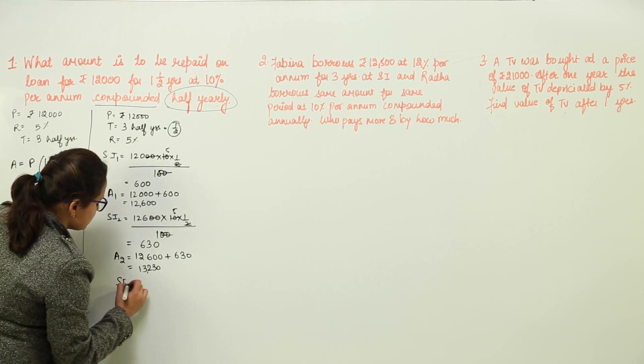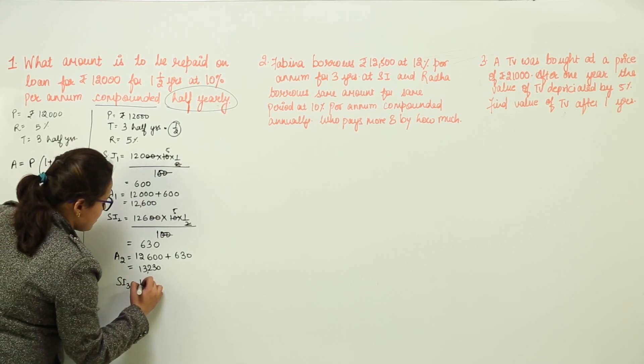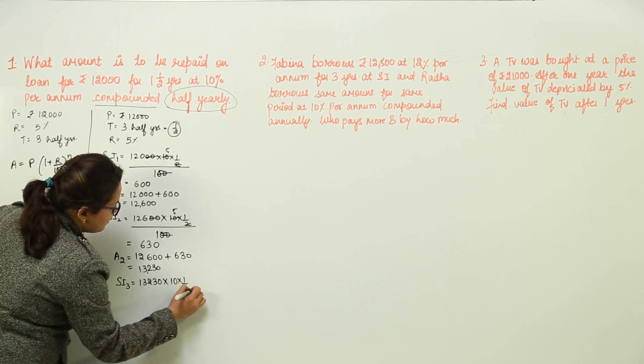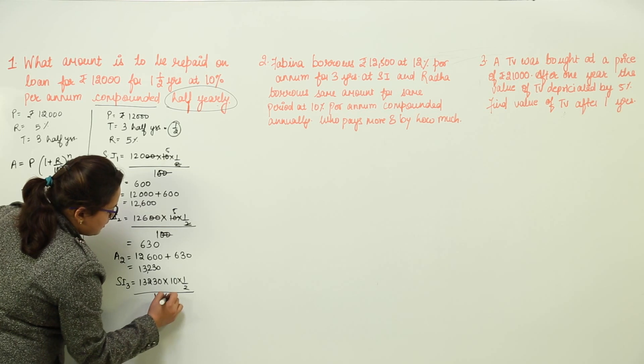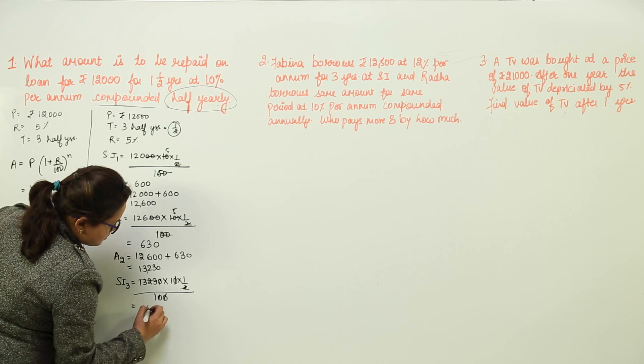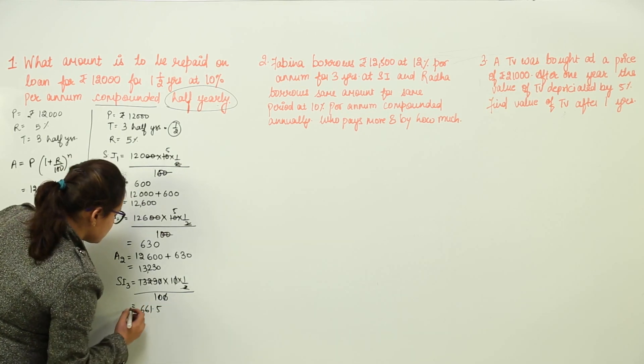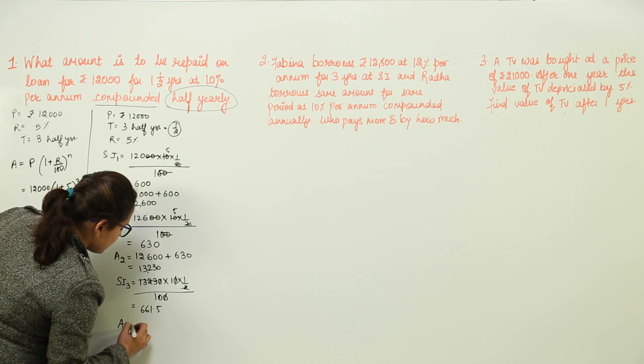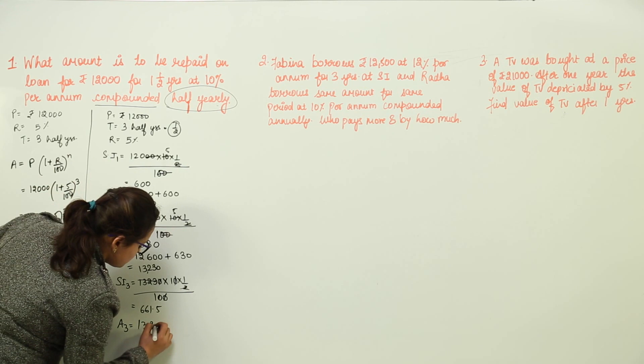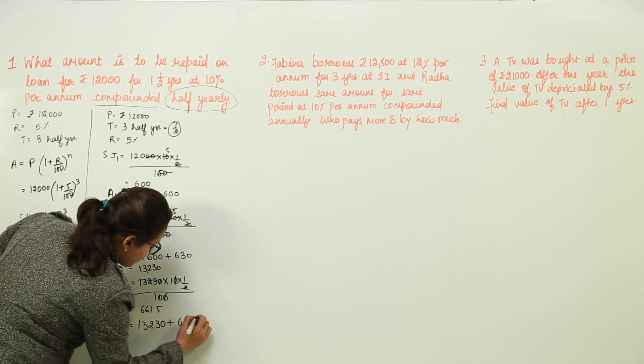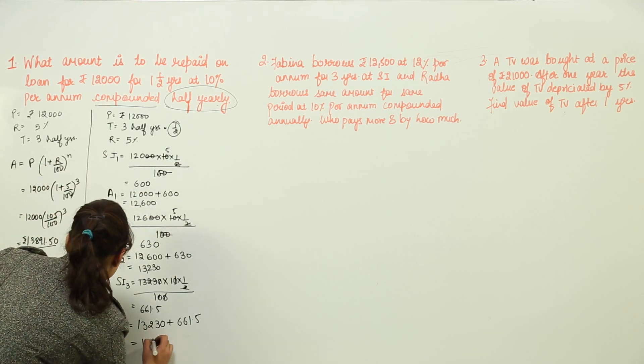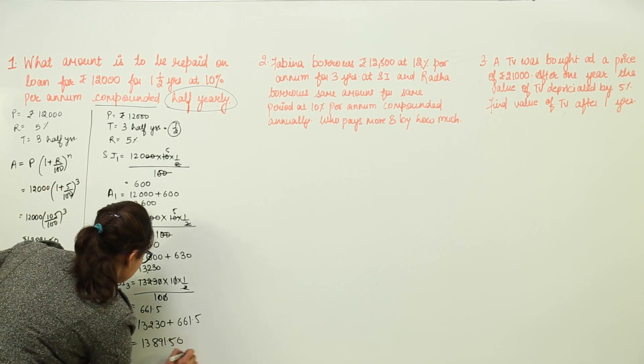Again, for the third year, the simple interest will be calculated with 13,230 into 10 into 1 by 2 upon 100. On solving, we get 661.5 as the simple interest. The final amount or the amount for third year would be equal to 13,230 plus 661.5 that is equal to 13,891.50.